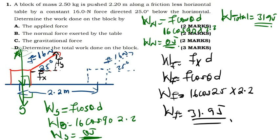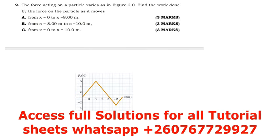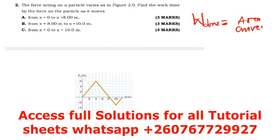For question 2, the force acting on a particle varies as shown in the figure. We need to find the work done from x = 0 to x = 8. The key principle here: when given a force versus displacement graph, the work done equals the area under the graph.